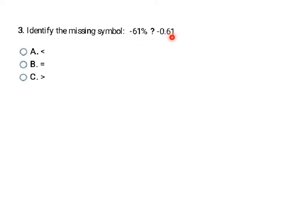Here I have a percent and a decimal, so I'll convert them both to the same form. I'll write the percent as a decimal by moving the decimal two places to the left. That gives me negative 0.61, and the other number is also negative 0.61. These numbers are exactly the same, so I use an equal sign — final answer is B.